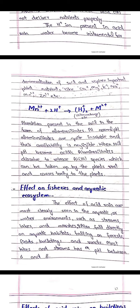Effect on fisheries and aquatic ecosystems: the effects of acid rain are most clearly seen in aquatic and water environments such as streams, lakes, and marshes. Acid rain also falls directly on aquatic habitats as well as on forests, fields, buildings, and roads. Most lakes and streams have a pH between 6 and 8.